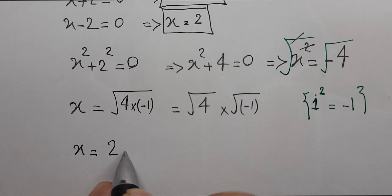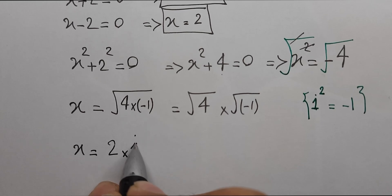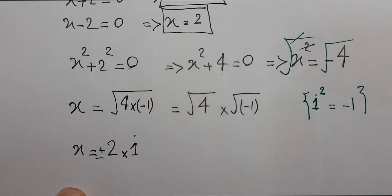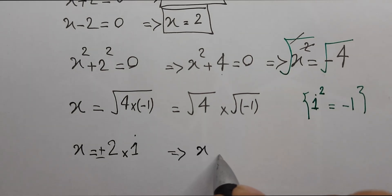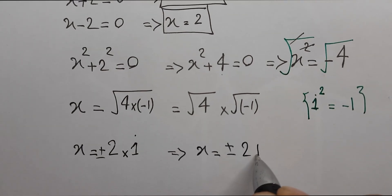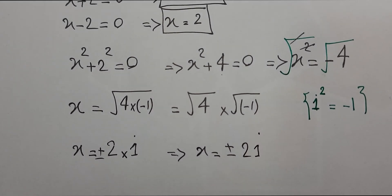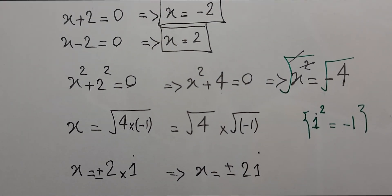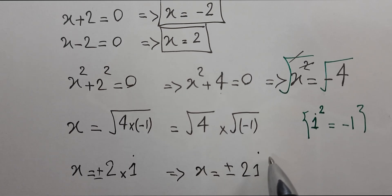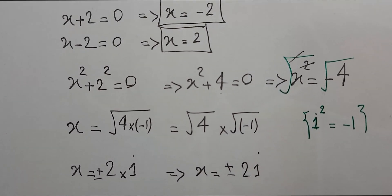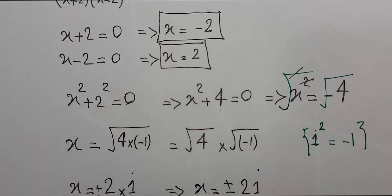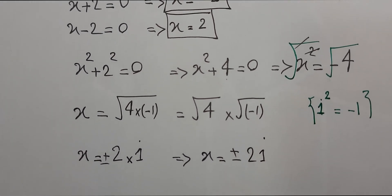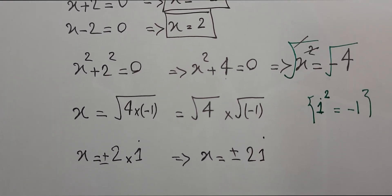So x equals plus or minus 2i. We have 2 real roots and 2 complex roots. Thank you so much for watching — goodbye guys!